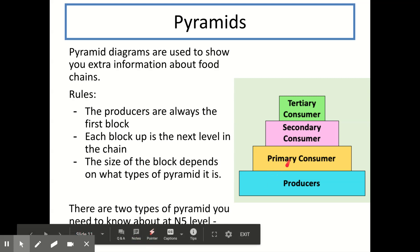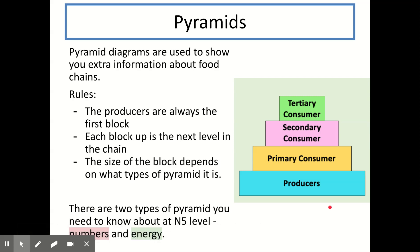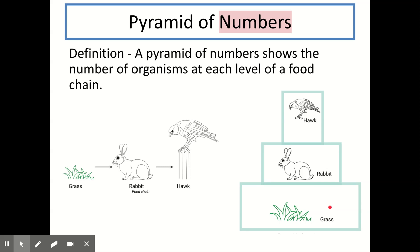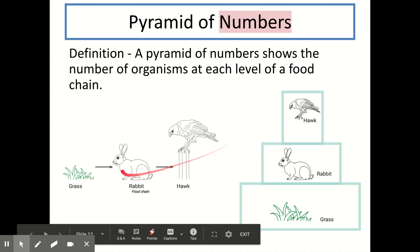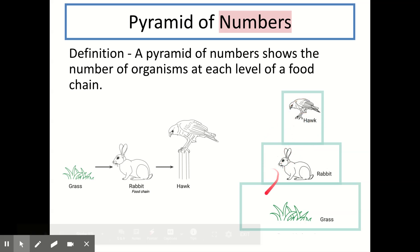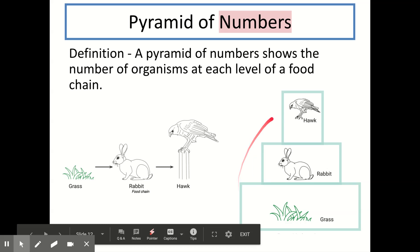The size of the block depends on what type of pyramid it is. There are two types you need to know at National 5 level: pyramids of numbers and pyramids of energy. A pyramid of numbers shows the number of organisms at each level of a food chain — how many blades of grass, how many rabbits, how many hawks. If we convert a food chain into a pyramid of numbers, we can see there are lots of blades of grass, fewer rabbits, and fewer hawks. Some pyramids of numbers will have actual numbers within them, such as 1000 blades of grass, 10 rabbits, and 1 hawk.